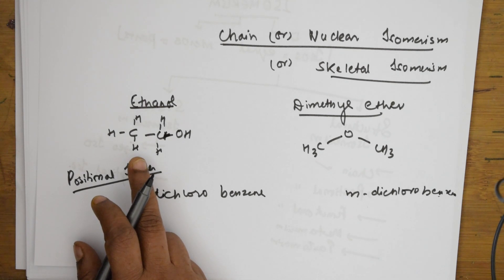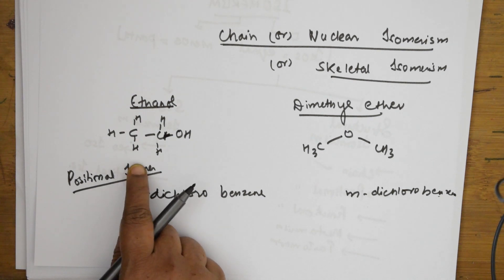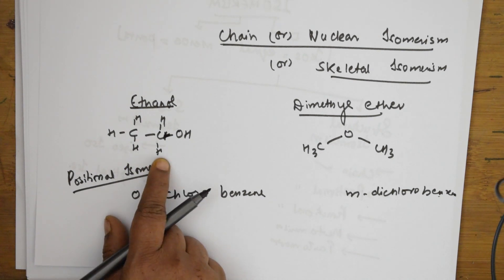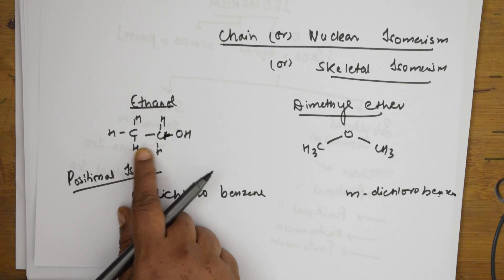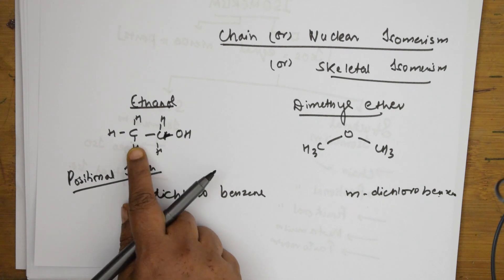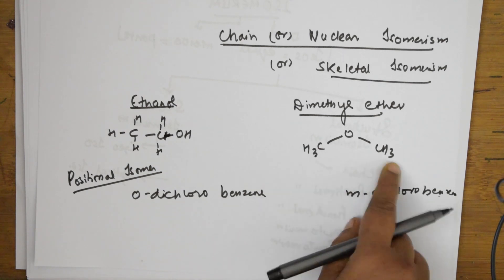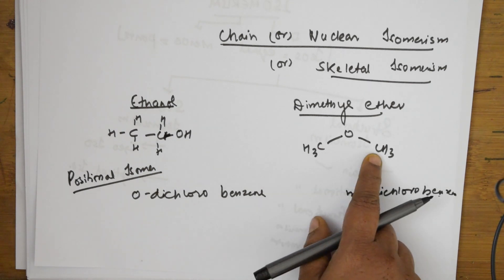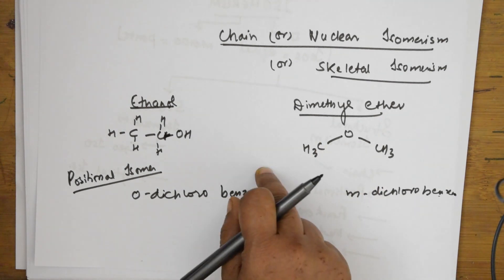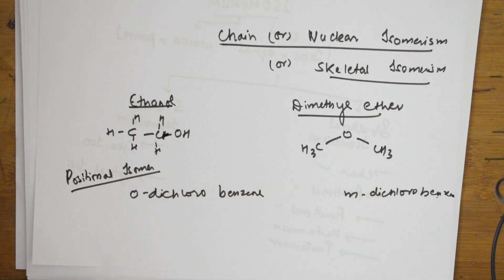Chain isomerism arises when there is a difference in the structure of the carbon chain. Here in ethanol the carbon chain is arranged one way, and in dimethyl ether the carbon chain structure is arranged differently. So chain isomerism is basically the difference in the structure of the carbon chain.